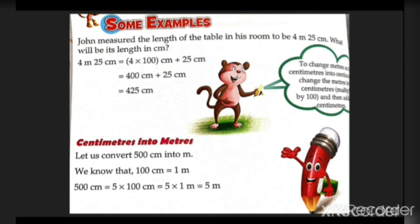John measured the length of the table in his room to be 4 meters 25 cm. What will be its length in cm? Four meters is 4 times 100 cm equals 400 cm, plus 25 cm equals 425 cm.